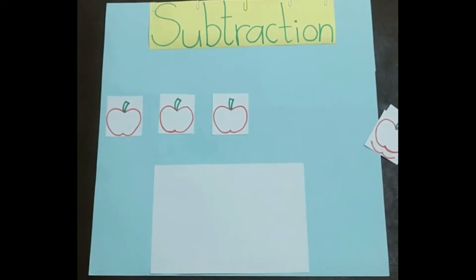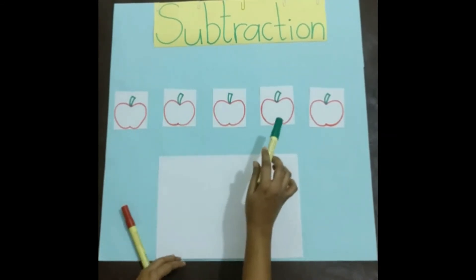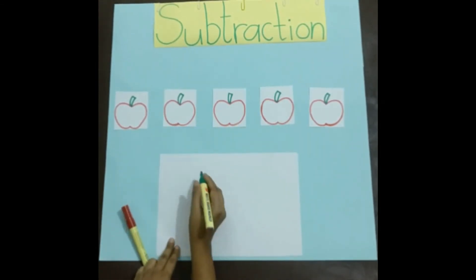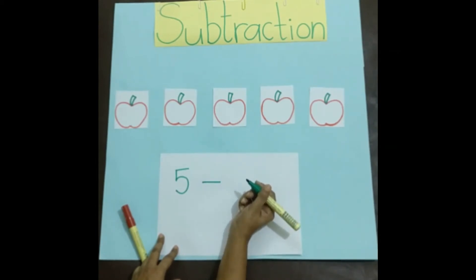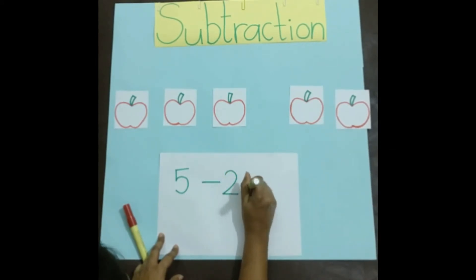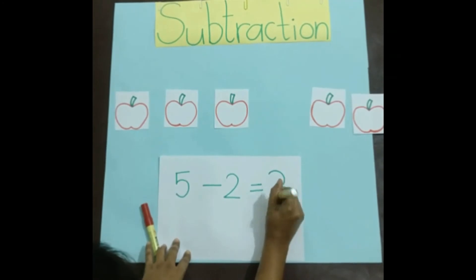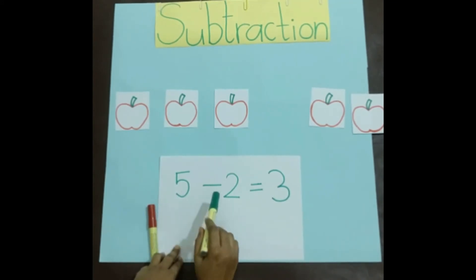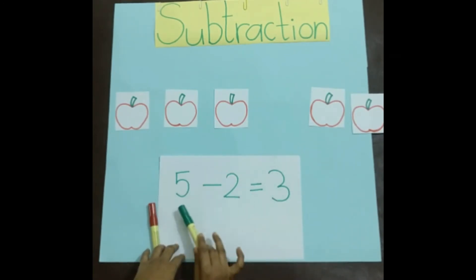Now we will learn how to represent it. We have five apples. We remove two apples. We are left with three apples. This is the way we will write: we have five apples, write five, then put a minus sign, then you give two apples to your friend, write two, then equal sign. Now we are left with one, two, three — three apples, write three. This is the answer: five minus two equals three. First we write five apples, then we remove or minus or subtract two apples, then we are left with three apples. This is the way we represent our problem.